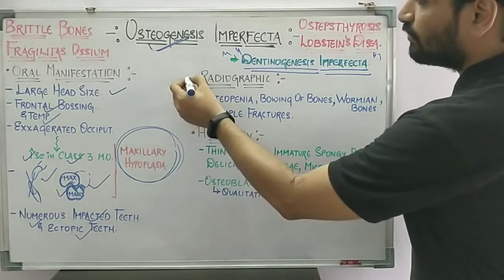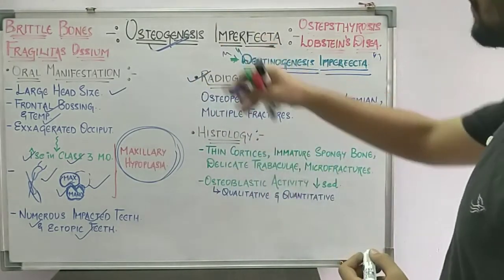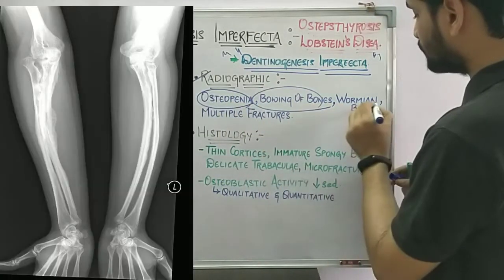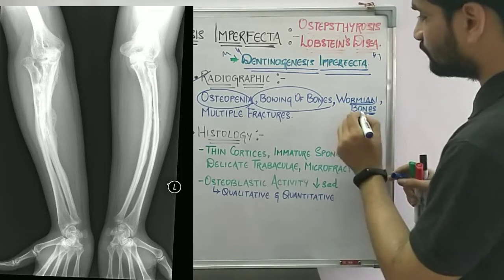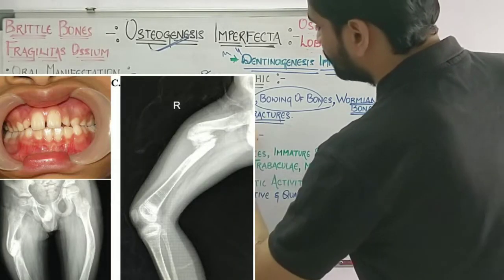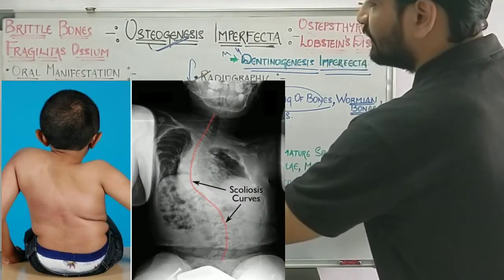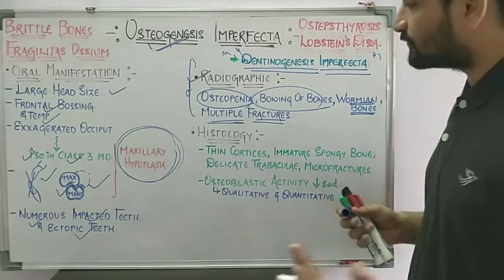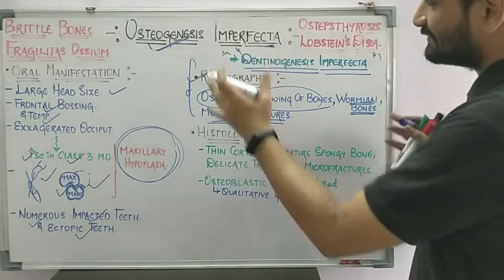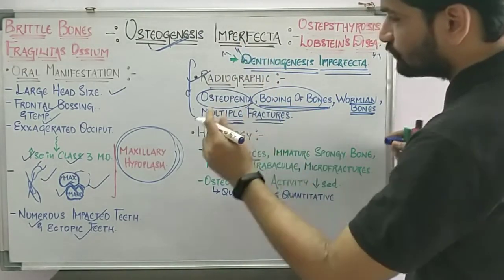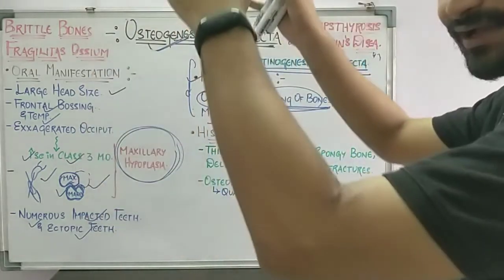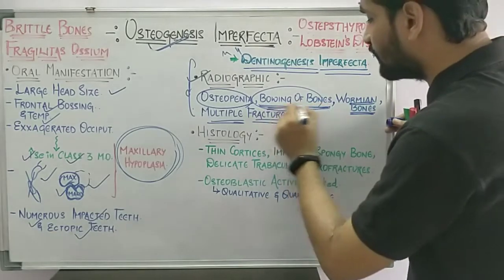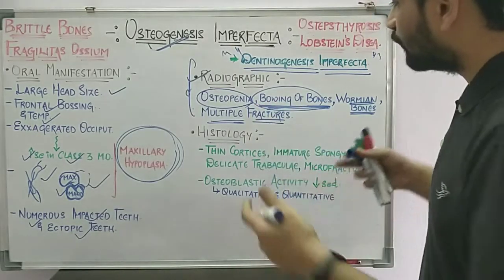Regarding radiographic features of osteogenesis imperfecta: you will see osteopenia, bowing of bones, Wormian bones (sutural bones seen in children), and multiple fractures. There is decreased osteoblastic activity, resorption areas, and more spongy bone. The main finding is bowing of the long bones — they become curved because they cannot bear the weight and are already fragile.